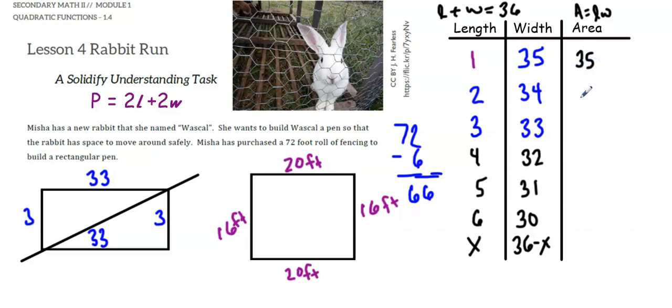1 times 35 is 35. 2 times 34 is 68. 3 times 33 is 99. So I can see that as the length is increasing, the area is also increasing.